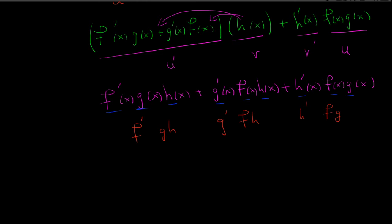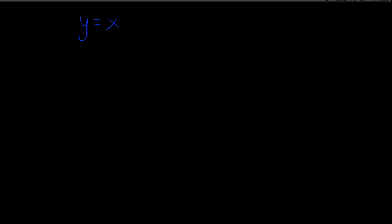Let's apply this shortcut to the next problem. We have y = x · cot²(x) · log(x). I'm going to rewrite cot²(x) as cotangent(x) with the whole thing squared, making it easier to work with.